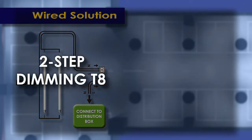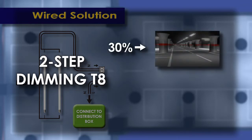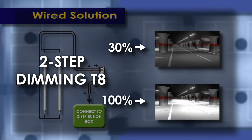Using two-step dimming LED tubes, a 30% illumination mode is maintained while no vehicle is passing through. An approaching vehicle will activate the 100% illumination mode when it passes the sensor.